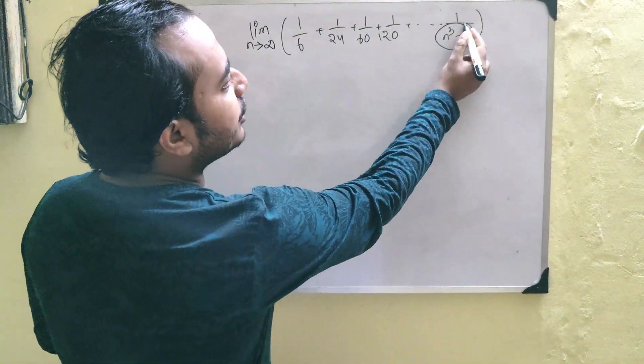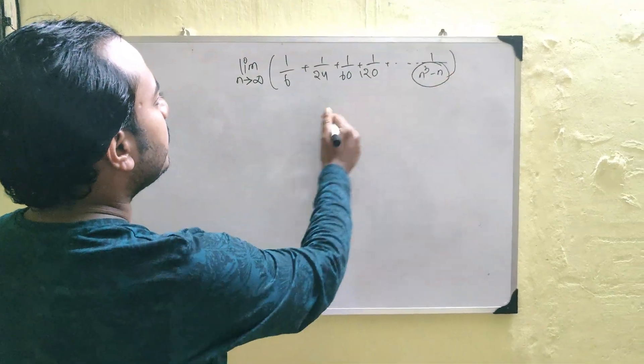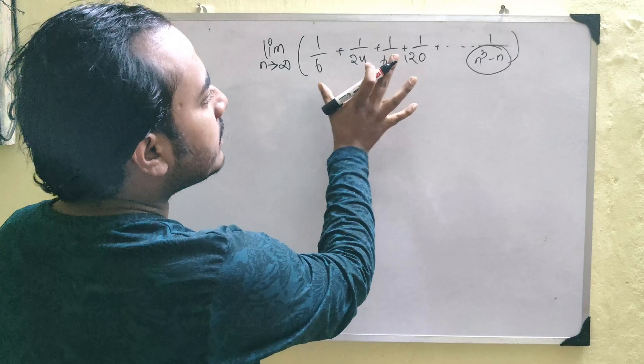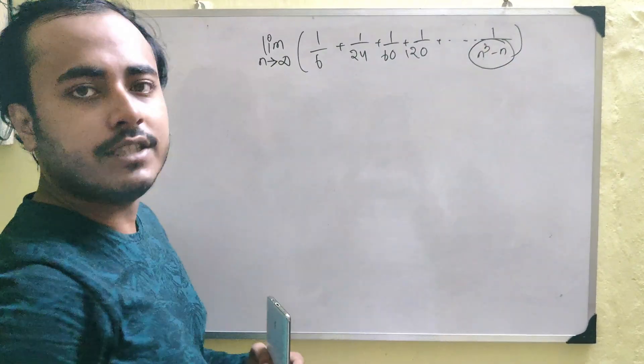So, understand that we are given the general term which is 1 upon n cube minus n and this is the limit. So, basically what it is saying is that find out the sum of the series to infinitely many terms where you are just given the general term.